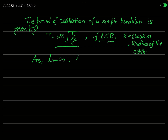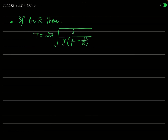When l is much greater than R, the expression T = 2π√(l/g) does not hold. Never think that the time period of a simple pendulum is always 2π√(l/g) — it depends on the length. When the length l is comparable to the radius of the earth, you get the general expression: T = 2π√(1 / [g(1/l + 1/R)]).